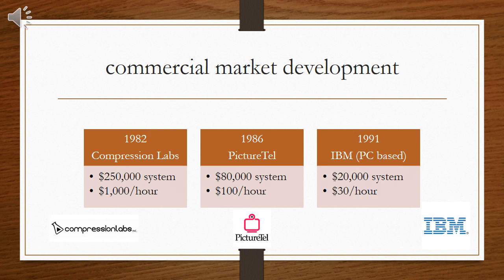Technology continued to advance and PictureTel was able to bring their product in 1986, lowering the price to $80,000 for their system and about $100 an hour for use. As technology continued, IBM was able to create a PC-based system at $20,000 and about $30 an hour per use.